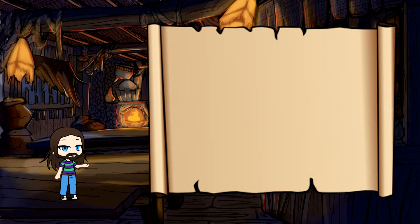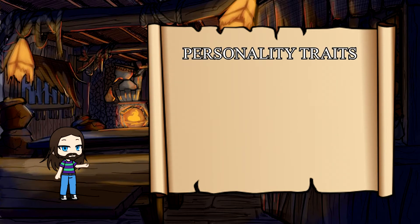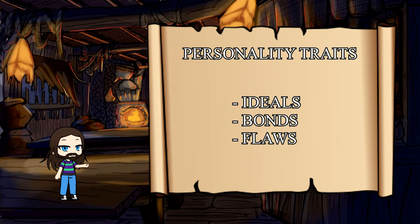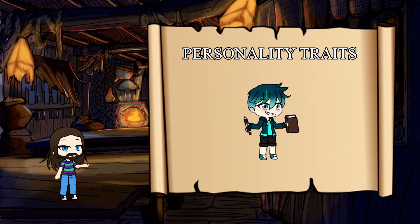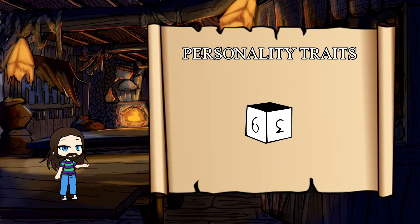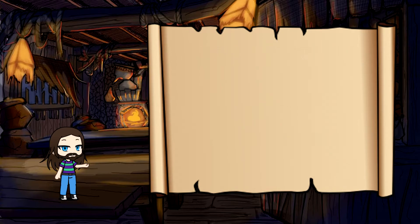You'll also gain some extra equipment. Next, you need to decide your personality traits. These are things like your ideals, bonds, and flaws. There are two ways you can do this: you can come up with these yourself, or if you're having trouble, there are characteristics you can roll for in each background description. After that, you should be all set.